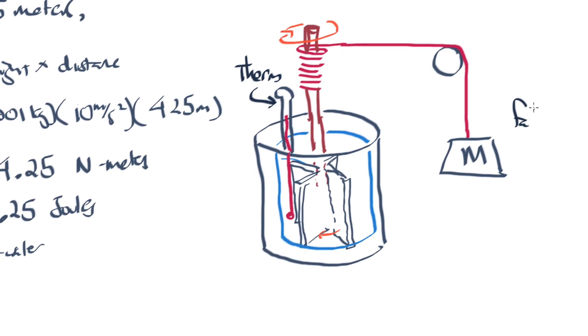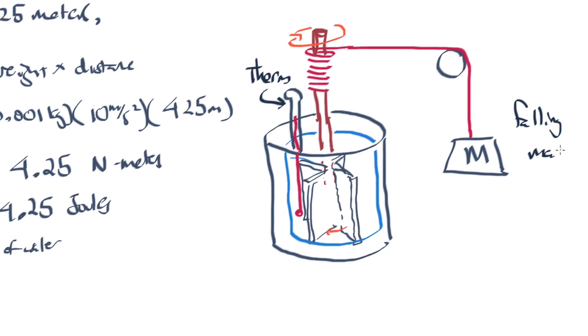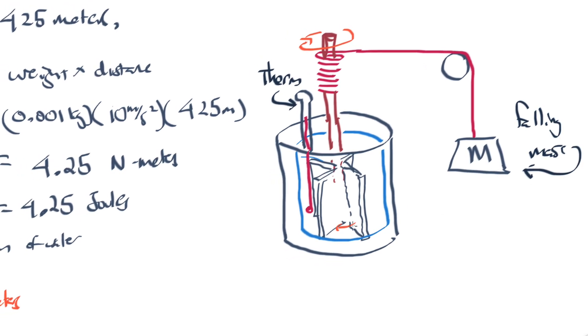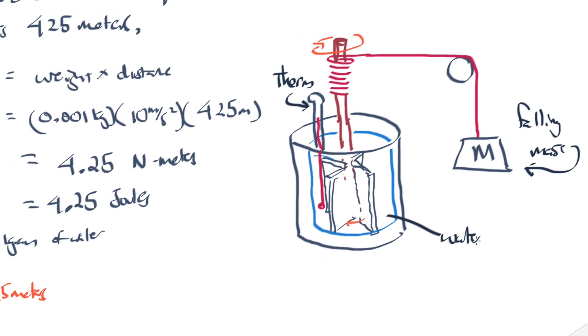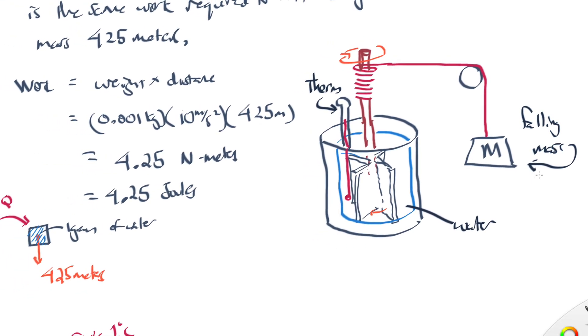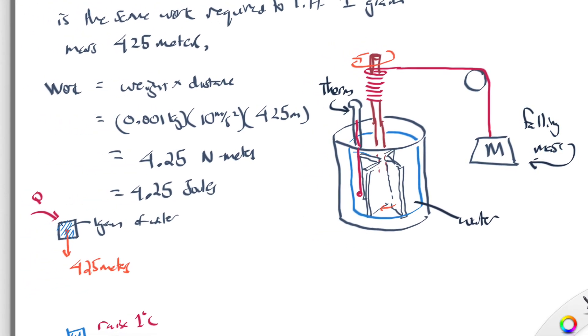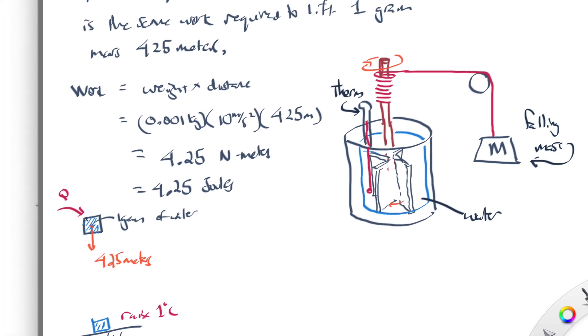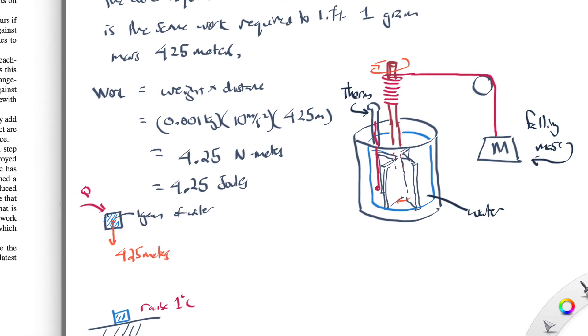This is the falling mass right here. This is the water right here. And so, what one can do then is see how far this falling mass has to fall in order to raise the temperature of the water by one degree Celsius.